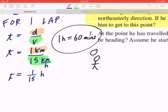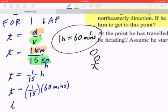This implies that 1 over 15th of an hour is 1 over 15th times 60 minutes. Which means for one lap, it's going to take 4 minutes.